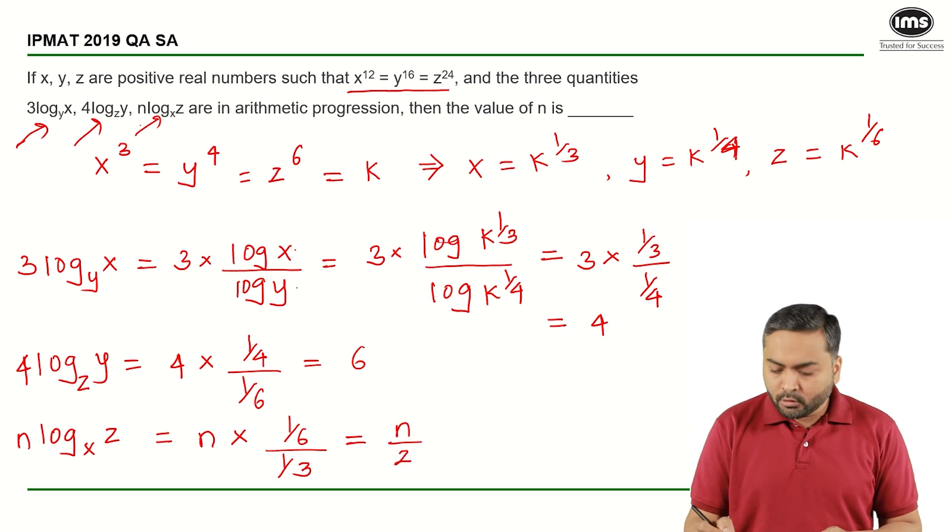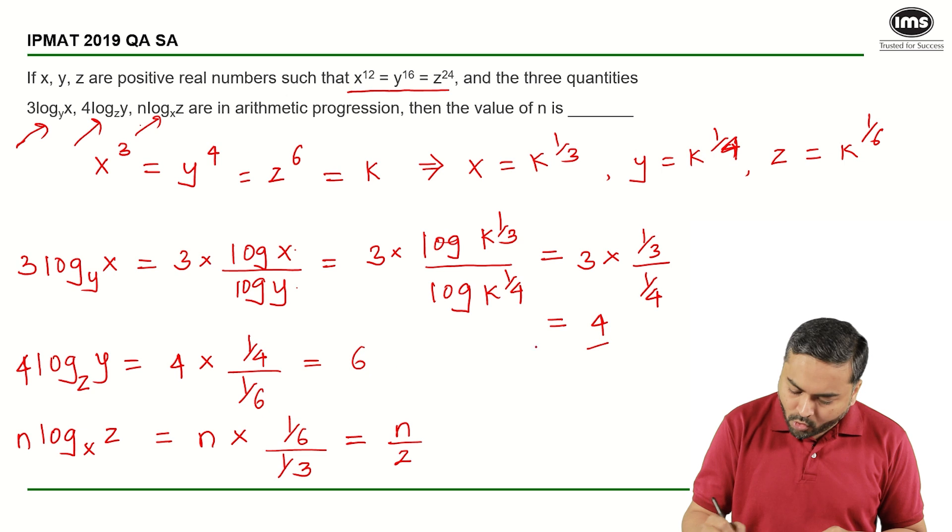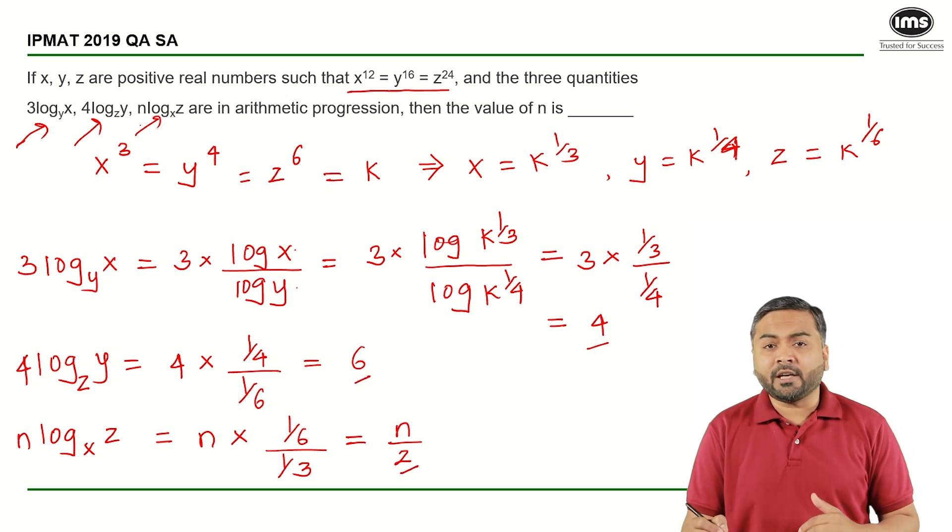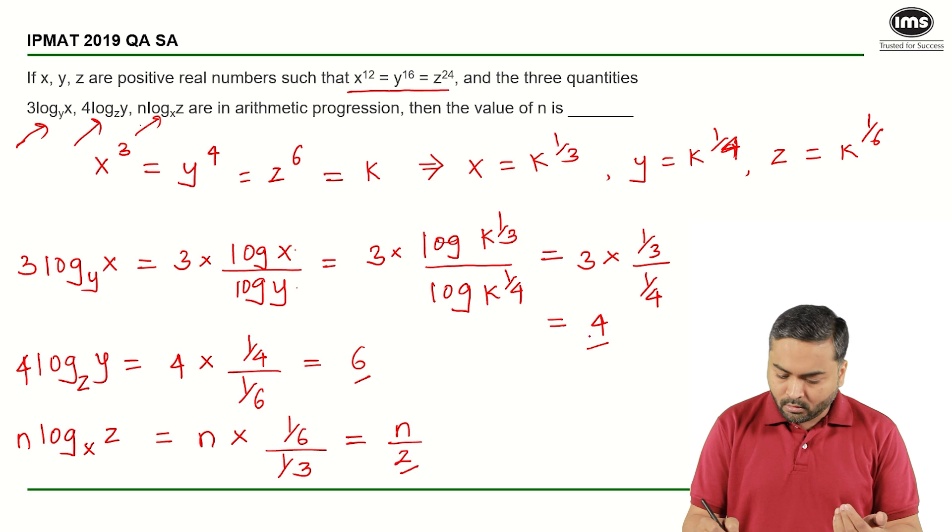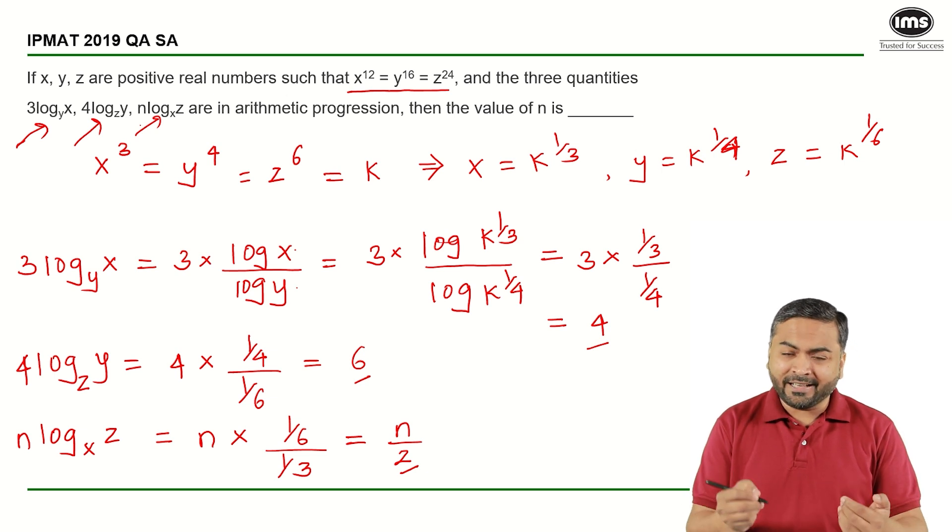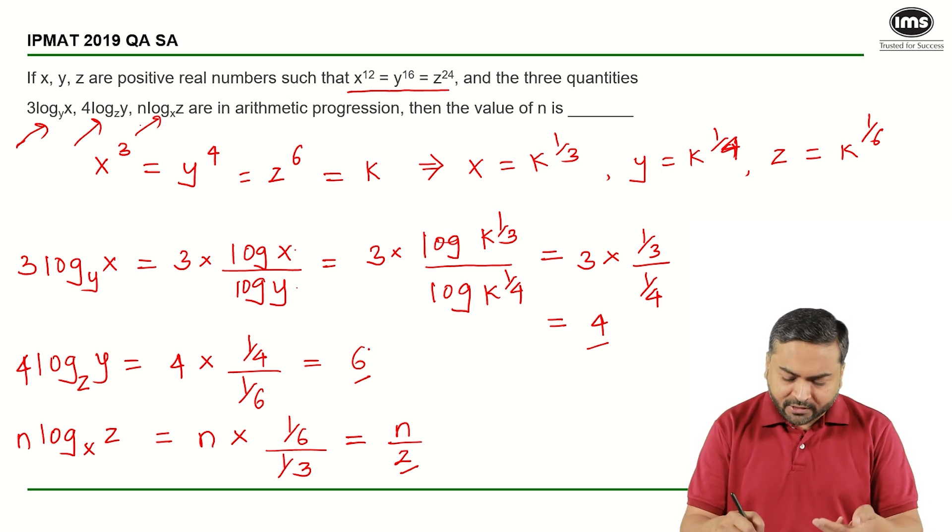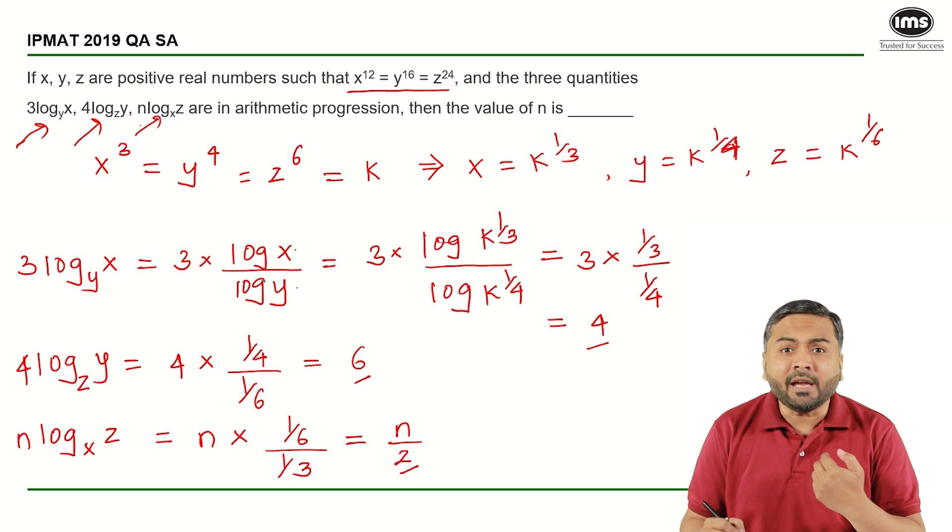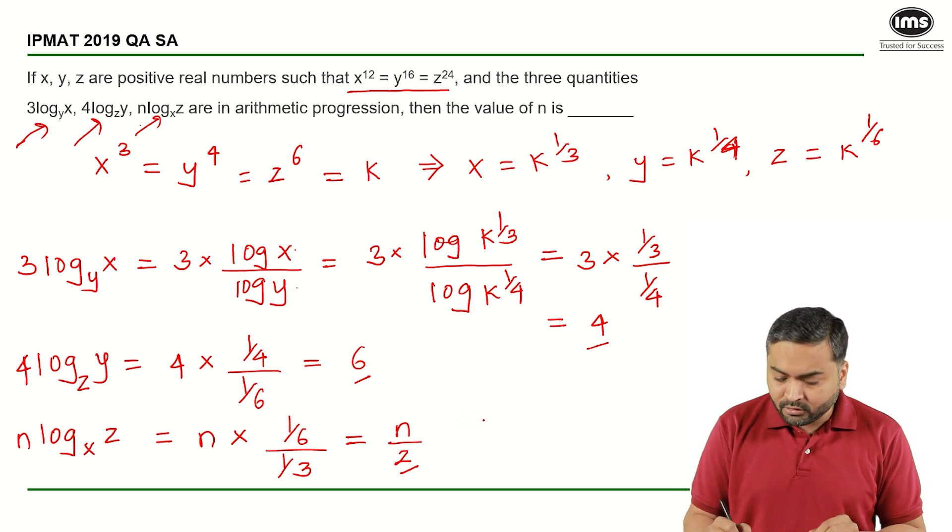So now I know that 4, 6, and n by 2 are in arithmetic progression. I can see that from 4 and 6, the difference is 2, so 6 and n by 2, the difference should again be 2. That means n by 2 should be equal to 8, which gives me n equals 16, and that should be the answer.